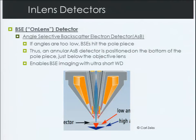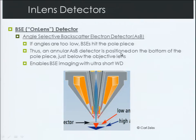There can also be a backscattered electron detector called on-lens, termed an angle-selective backscatter detector. It's located not in, but on the lens — right on the front of the objective lens. The reason we have this is if some backscattered electrons are emitted at angles other than perpendicular, we can still detect them. This enables backscattered imaging with very short working distances, so we won't miss any of the signals being produced by our sample and beam-specimen interaction.